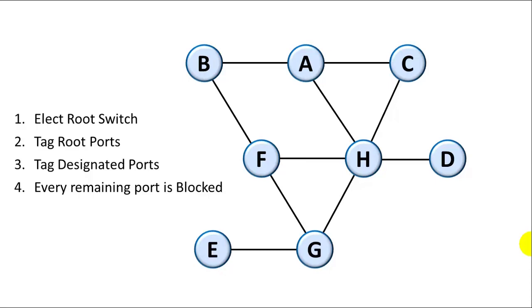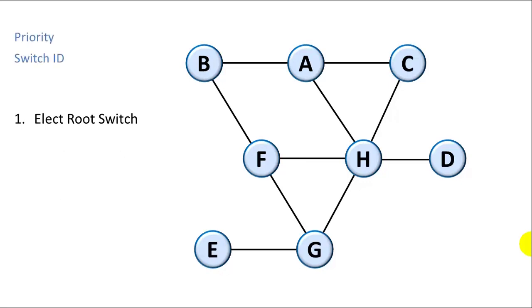We're going to start by electing the root switch. Then we're going to tag the root ports. Then we're going to tag designated ports. And then we'll block every remaining port. So to elect the root switch, how do we do that?